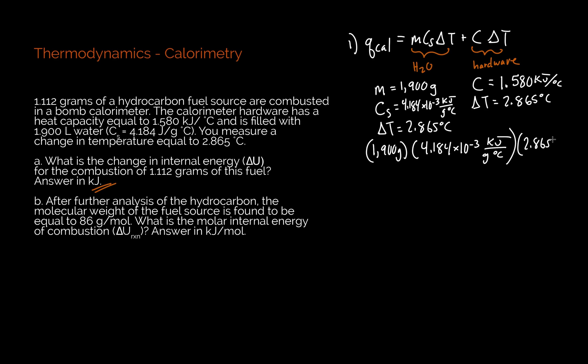I'm going to add this to my hardware component: 1.580 kilojoules per degree C times the change in temperature, 2.865 degrees C. I want to show grams cancels with grams, degrees Celsius with degrees Celsius, and I end up with just kilojoules plus kilojoules.